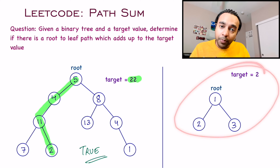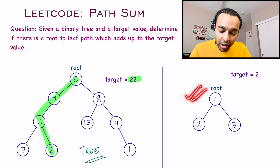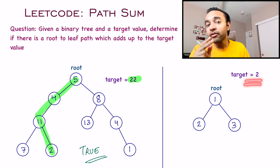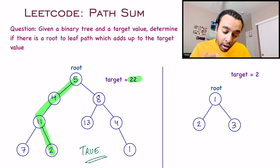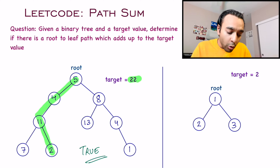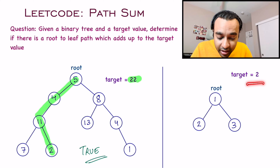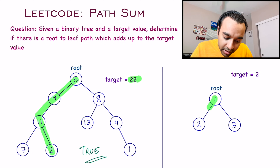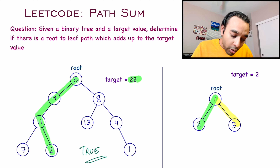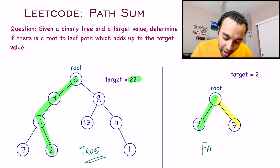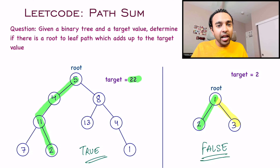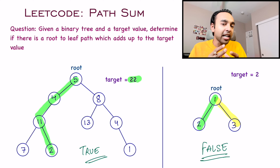Similarly, let us look at test case number 2. We have a relatively smaller tree and the target value is just 2. In this tree, although you have 2 as a node, there is no way that you can start from the root node and reach the leaf node with this target value. You only have two paths: 1 and 2, that gives you 3, or 1 and 3, that gives you 4. So in this particular test case, you will write down false as your answer. If you feel you understand the problem statement, feel free to try it out first. Otherwise, let us dive into the solution.